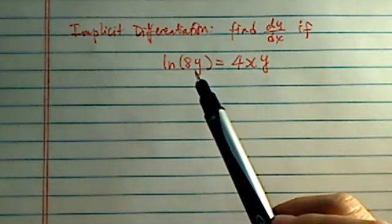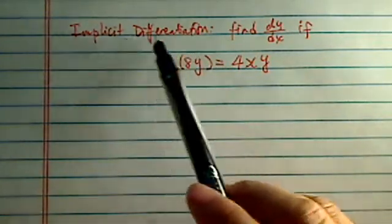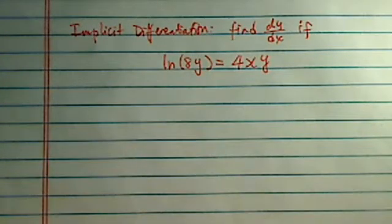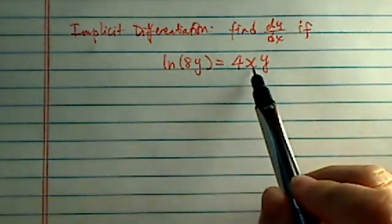Hey there. Thank you for watching this clip on implicit differentiation. We're given an equation here, natural log of 8y equal to 4xy.